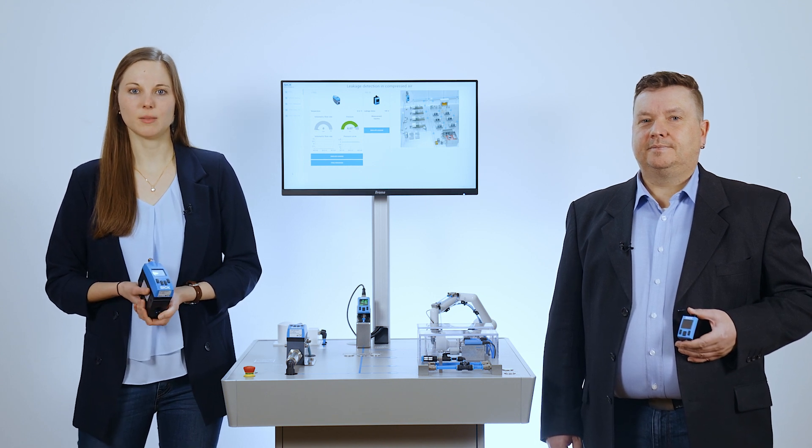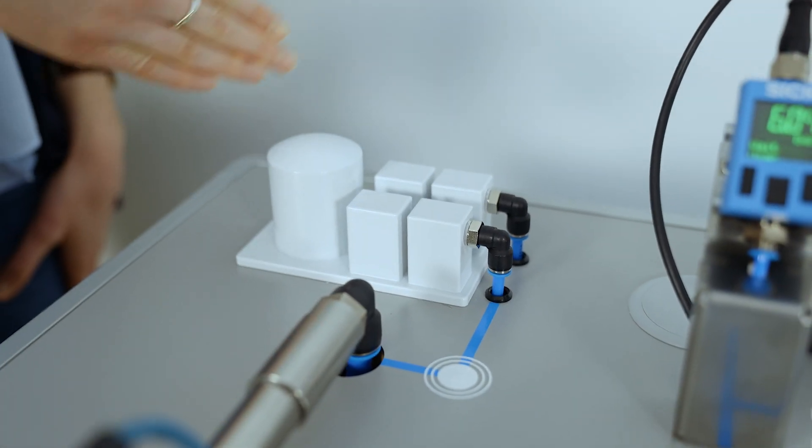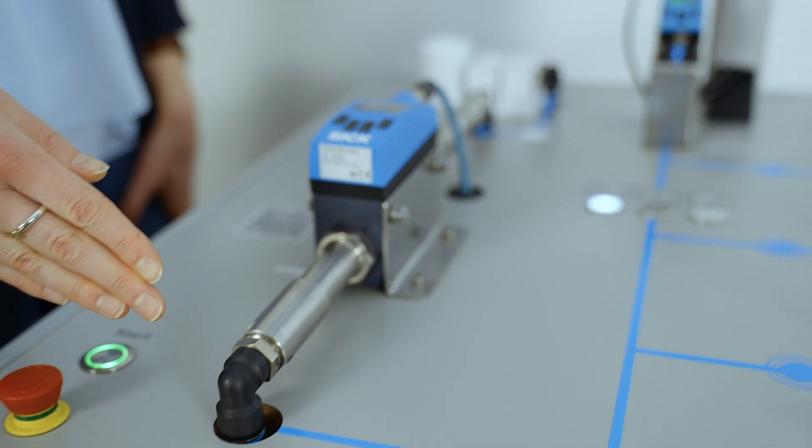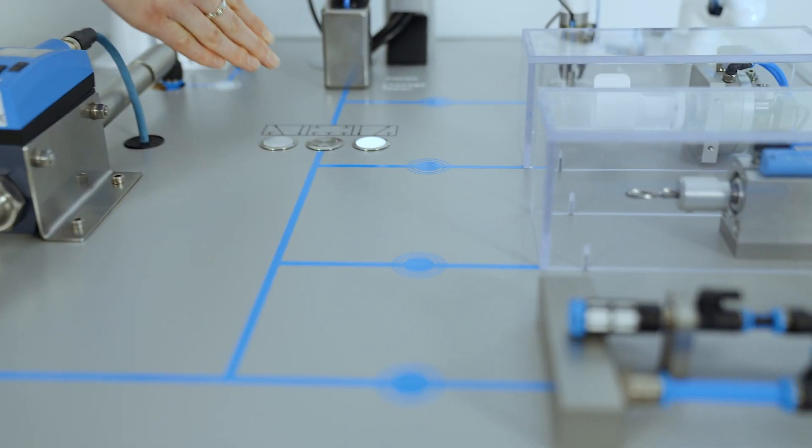The FTMG is mounted in the superordinate compressed air network in the exhibition model. The compressed air flows from the compressed air generation area through the FTMG with its inlet and outlet zones and is then distributed to the individual consumers.